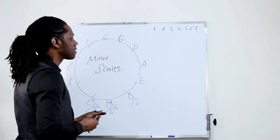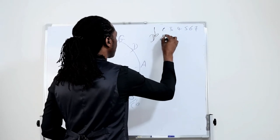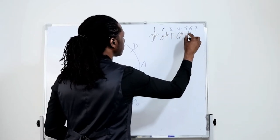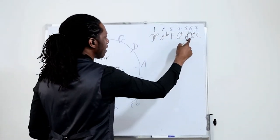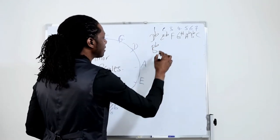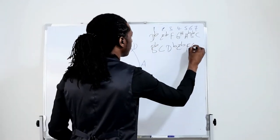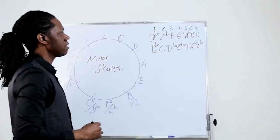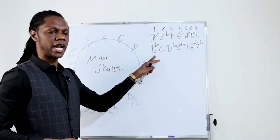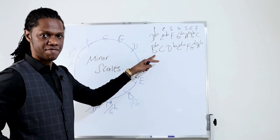D flat has five flats. D flat, E flat, F, G flat, A flat, B flat, C. One, two, three, four, five, six — so we have B flat, C, D flat, E flat, F, G flat, A flat. The relative minor or natural minor of D flat major is B flat. Or D flat, harmonically, is the same as C sharp.